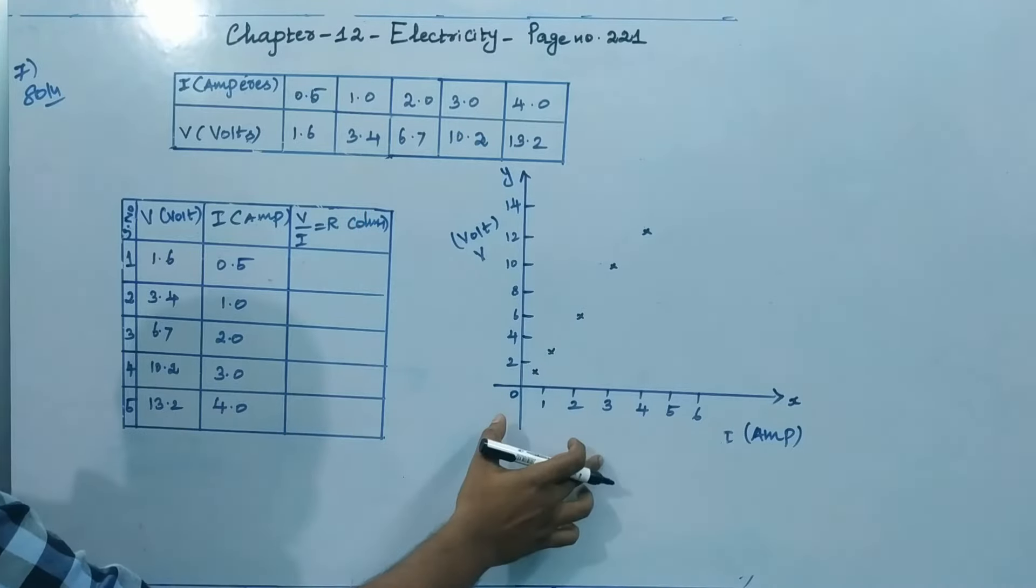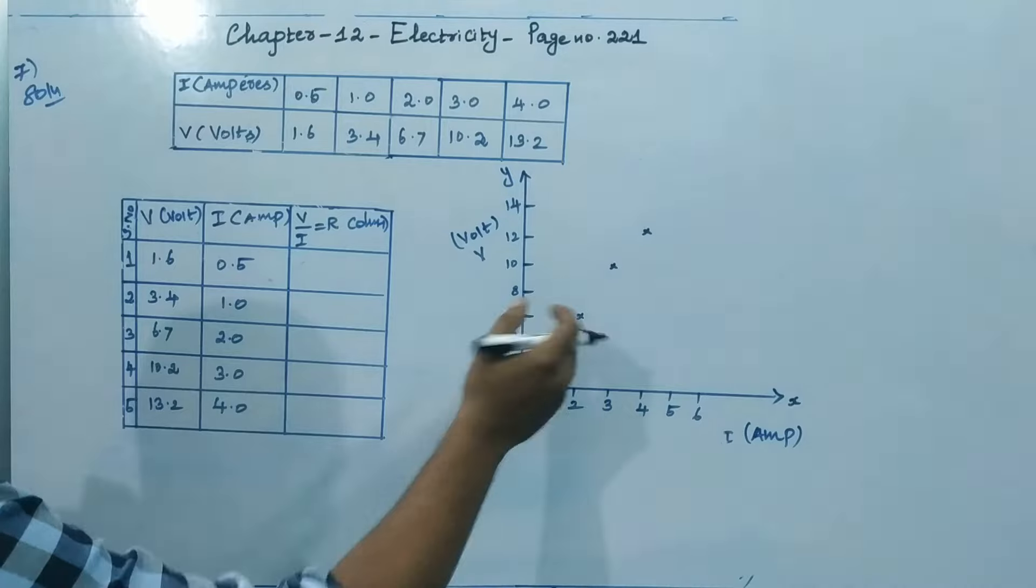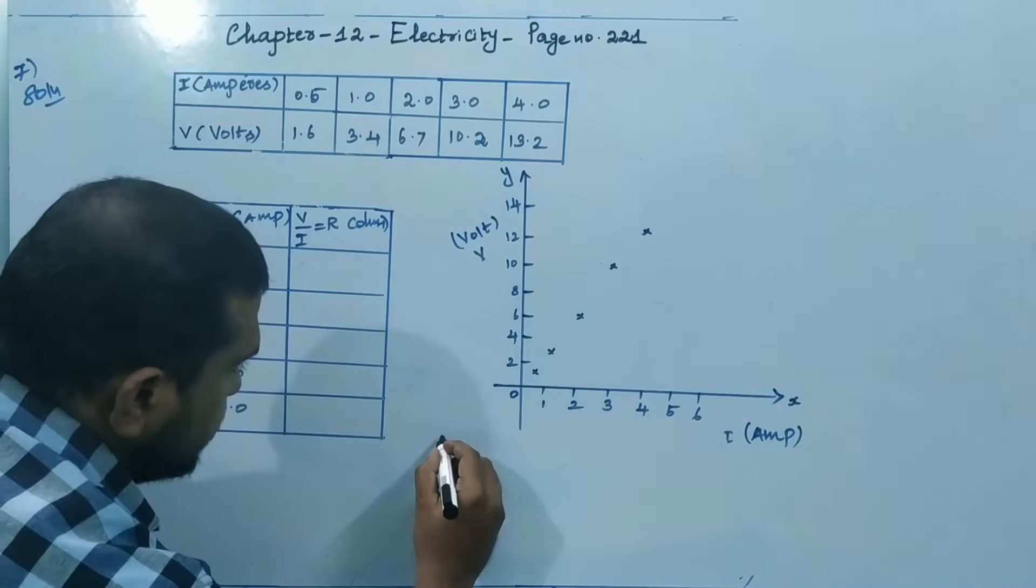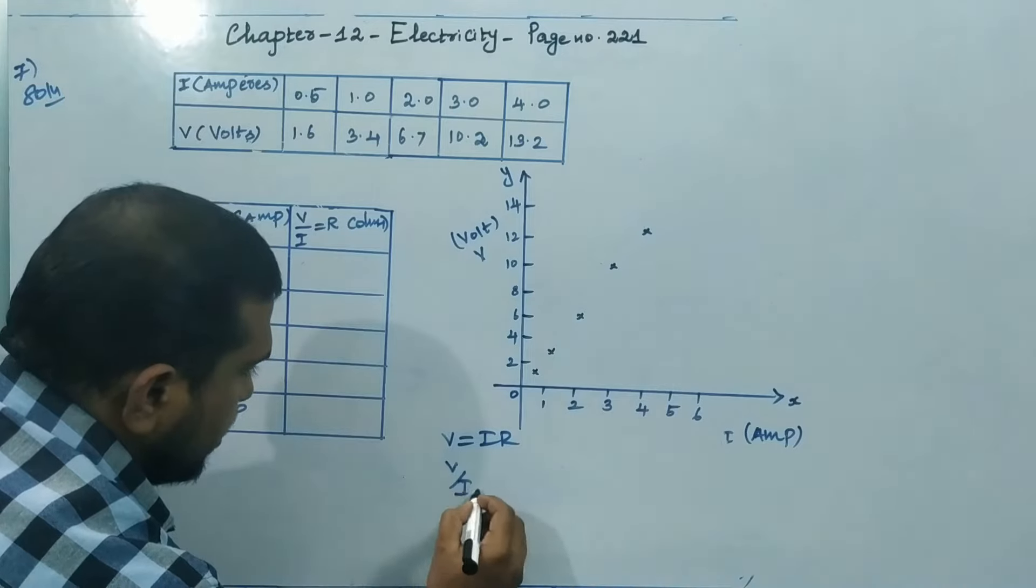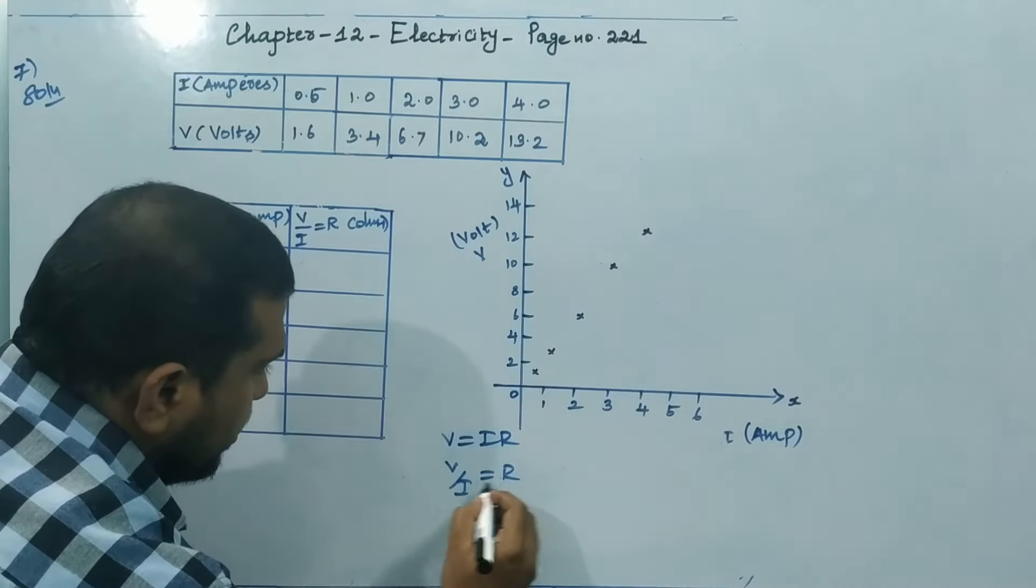This is a V-I graph. So the V-I graph will give the value of R. According to Ohm's law, V is equal to IR. Then V, the ratio of V by I gives the resistance.